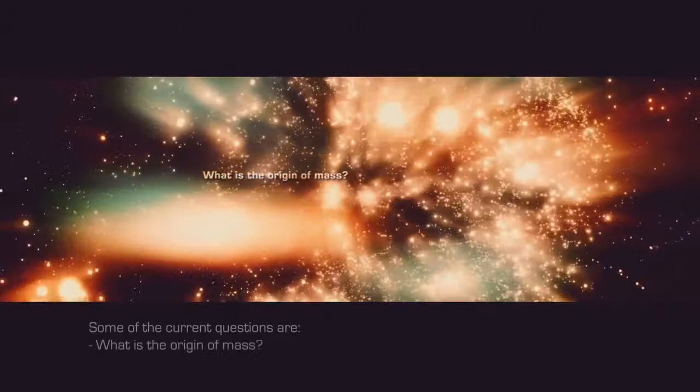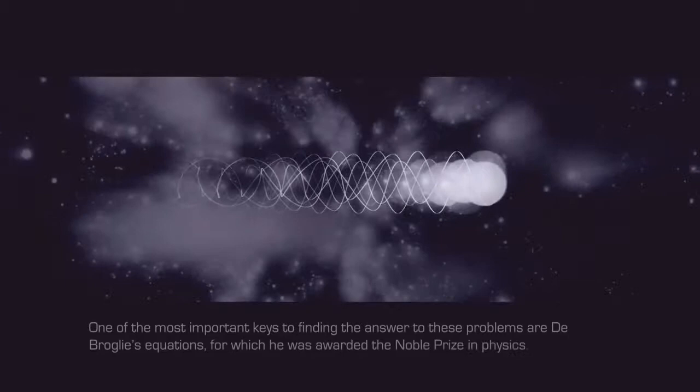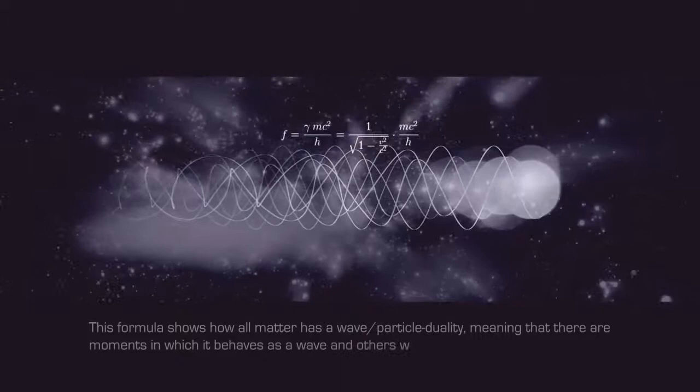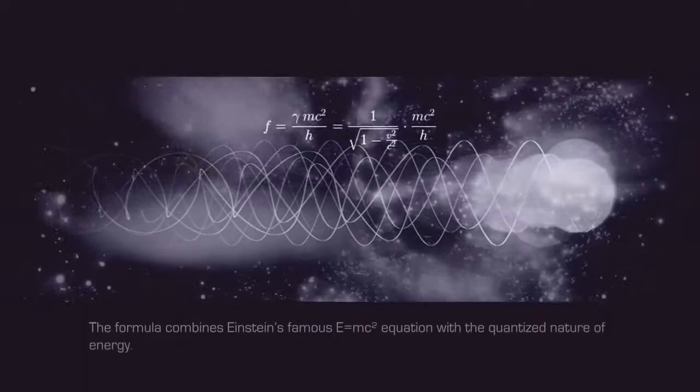One of the most important keys to finding the answer to these problems are de Broglie's equations, for which he was awarded the Nobel Prize in Physics. This formula shows how all matter has a wave-particle duality, meaning that there are moments in which it behaves as a wave and others where it behaves as a particle. The formula combines Einstein's famous E=mc² equation with the quantized nature of energy.